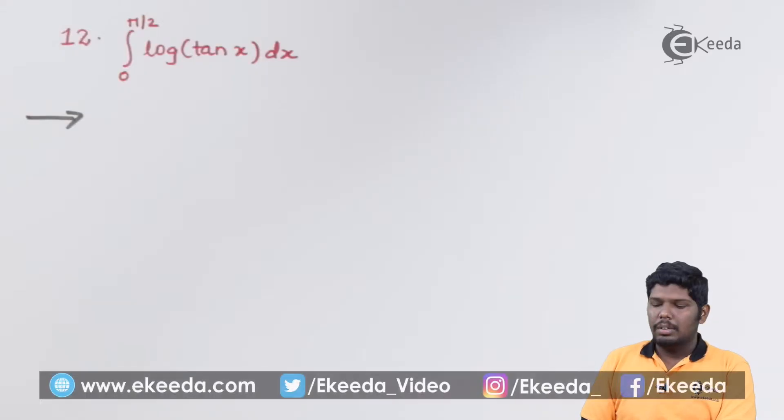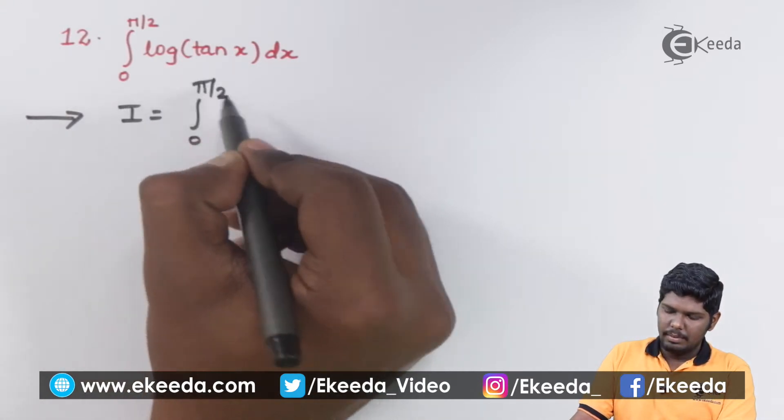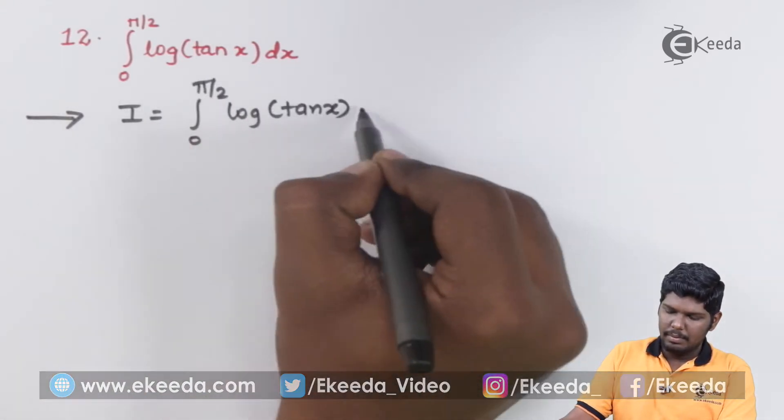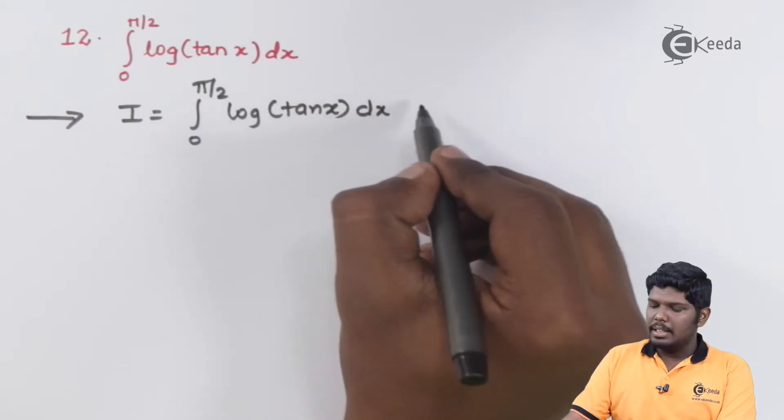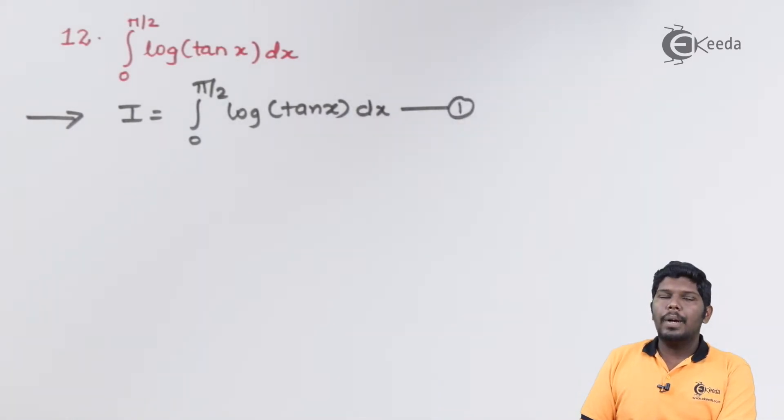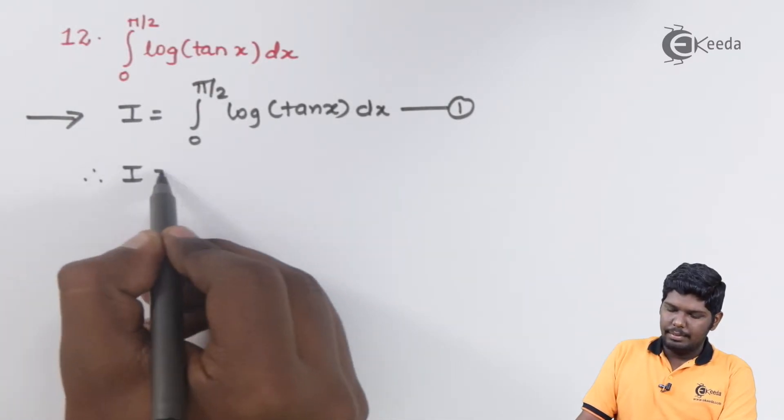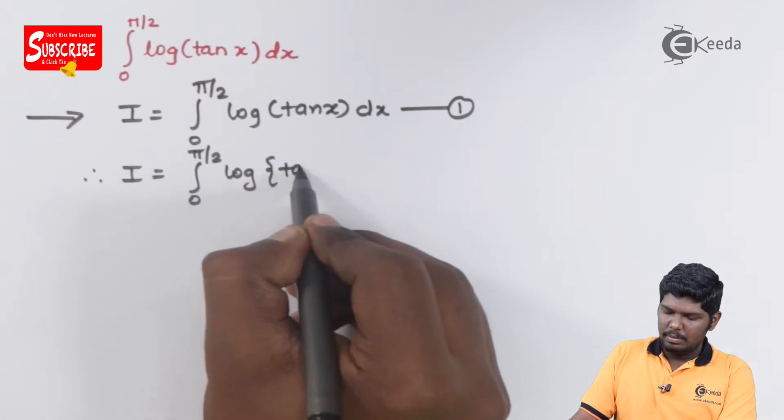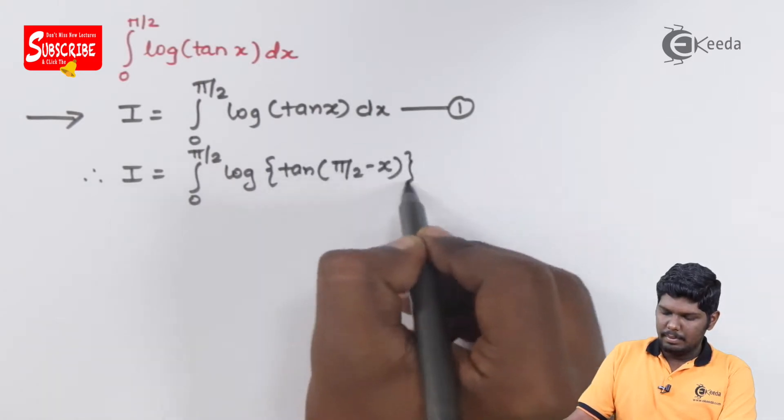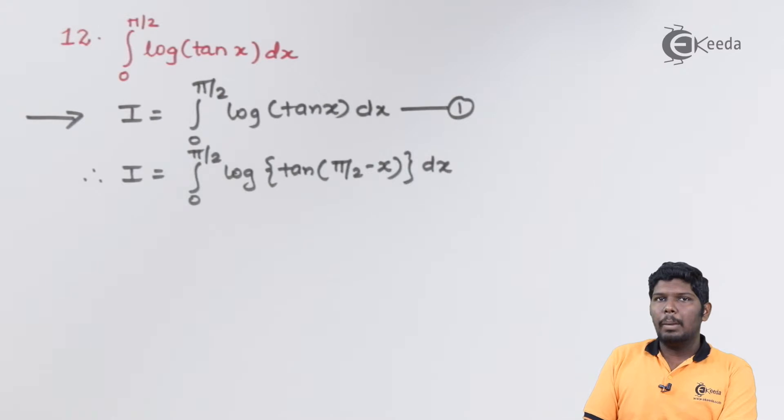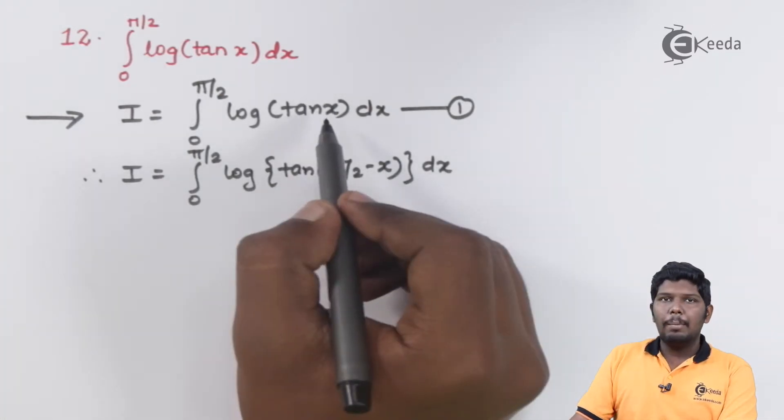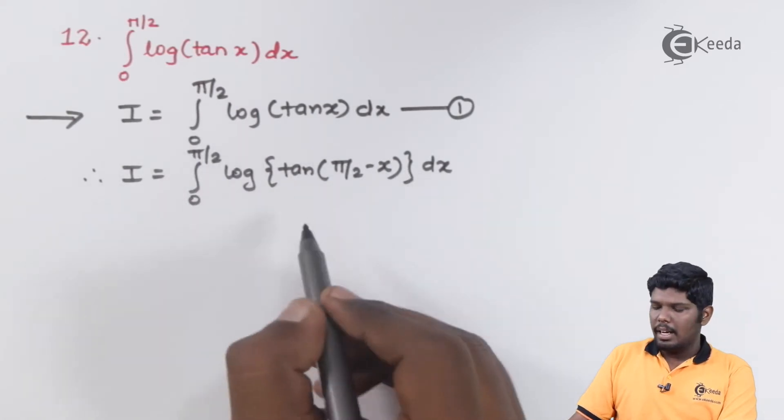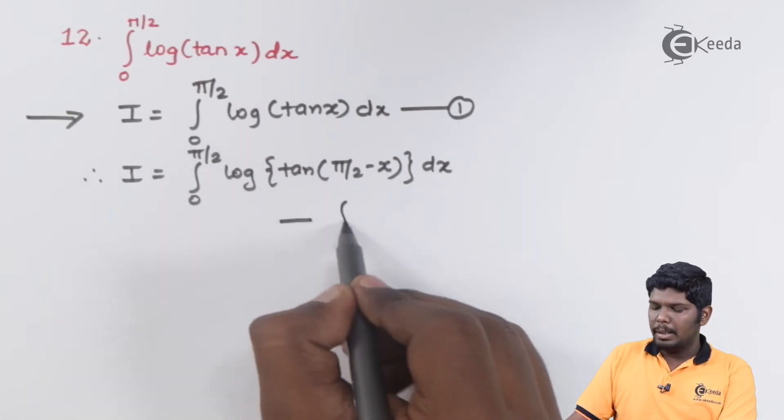Integral 0 to pi by 2, log of tan x dx. Let us consider this as equation number 1 and use the property of integral 0 to a f dx. Which will give you integral 0 to pi by 2, log of tan pi by 2 minus x. We have replaced x as upper limit minus x and for that we will mention the property.